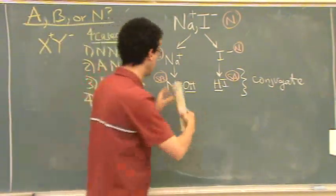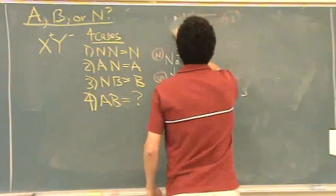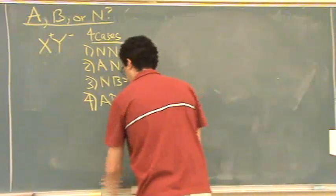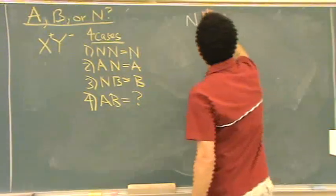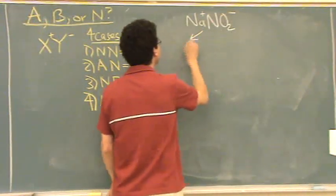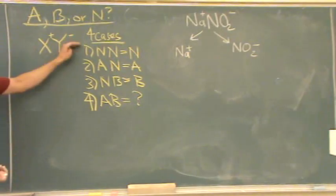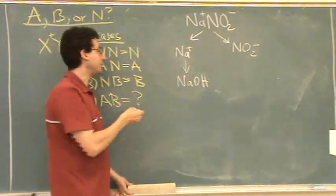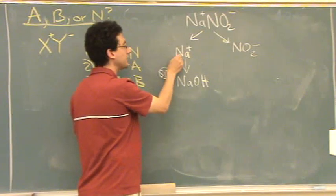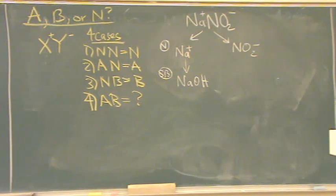Let's try NaNO₂ on page 689. Same approach: separate into sodium plus and nitrite. For sodium, we add OH to get NaOH — we already established that's a strong base, so sodium is neutral. A hint: anything in the first two columns of the periodic table you're going to consider neutral, because the alkali and alkaline earth metals form strong bases.